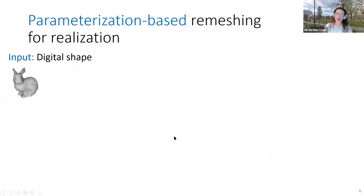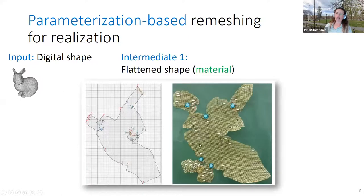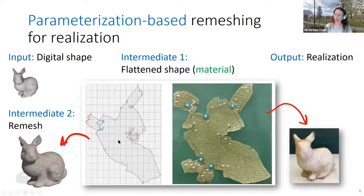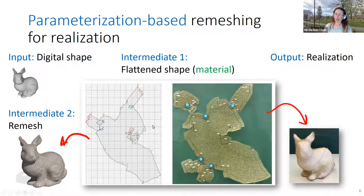Specifically, I want to work with parametrization-based remeshing for realization. I take my digital shape, generate an intermediate flattening of this shape to the plane — which depends on the material — and from this flattening I generate both the remesh and the realization. If my material is flat, I can easily map the flattening to the material and generate the realization.